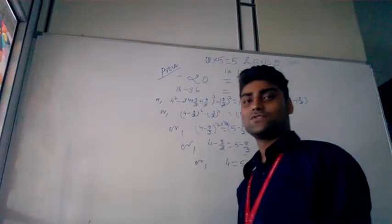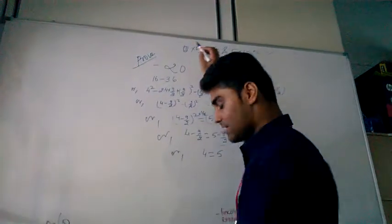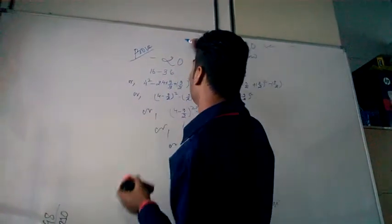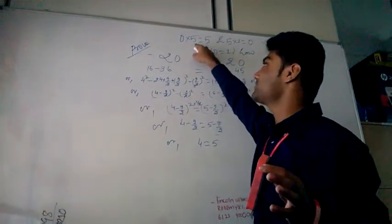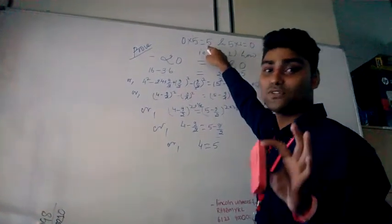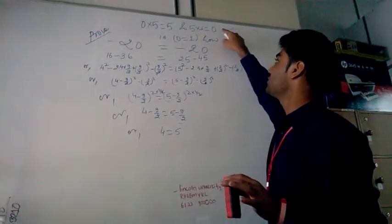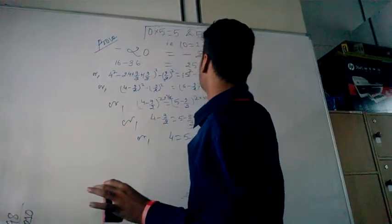Hello friends, welcome. Today I am going to show you 0 into 5 equals to 5. How? We all have studied that 0 into 5 equals to 0. But now I am going to show you 0 into 5 equals to 5, and 5 into 0 equals to 5 into 1 equals to 0. So today's topic is this one.